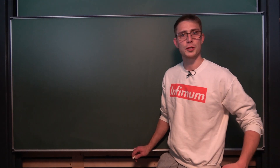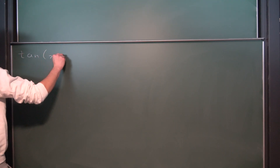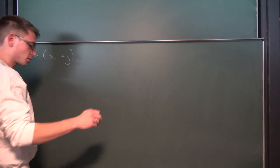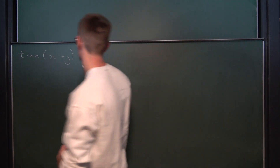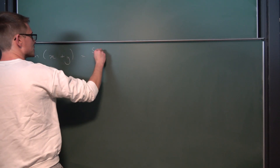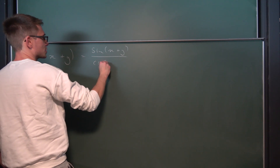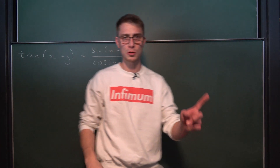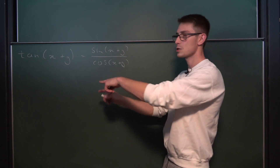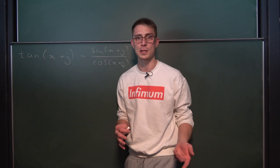First thing we do is just write it down. This right here is the tangent of x plus y. How can we proceed from here? Well, obviously, by the definition of the tangent, this is nothing other than the sine of x plus y divided by the cosine of x plus y. Now we are going to make use of the addition formulae for the sine and the cosine and substitute everything in to see if we can get a nice expression.